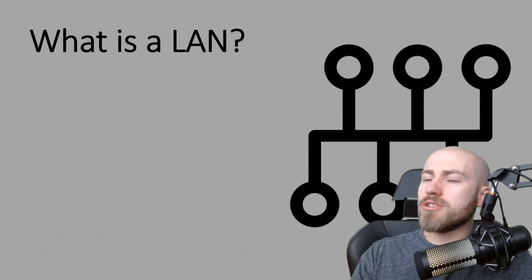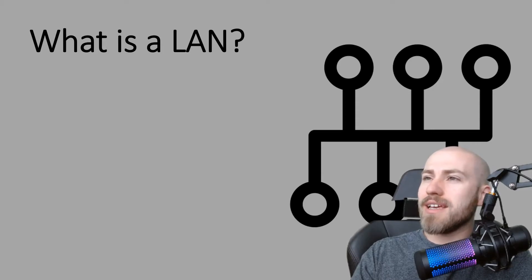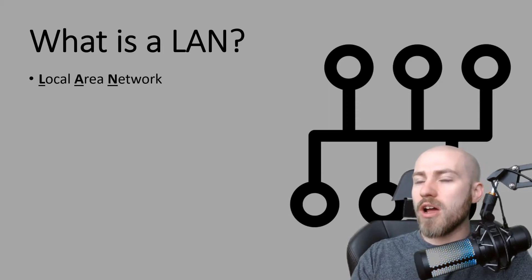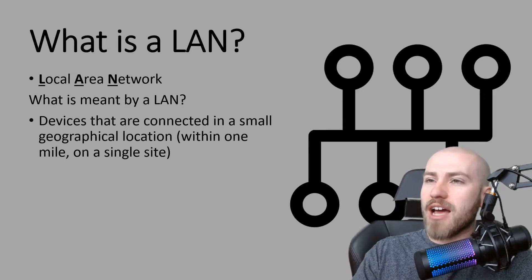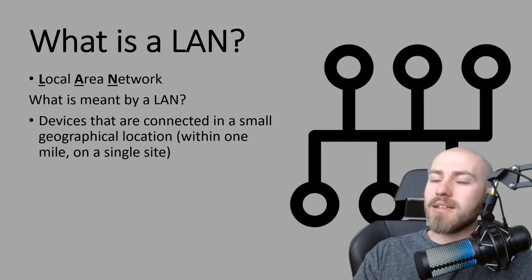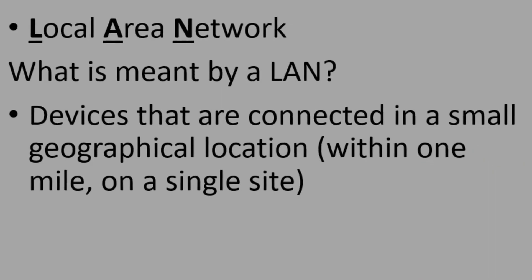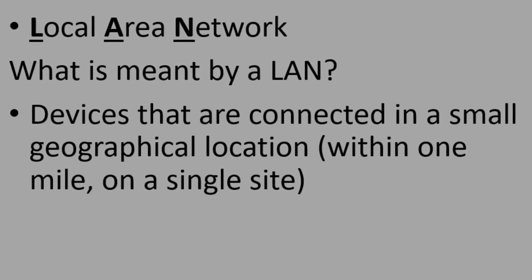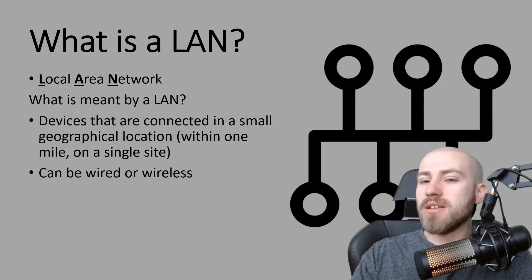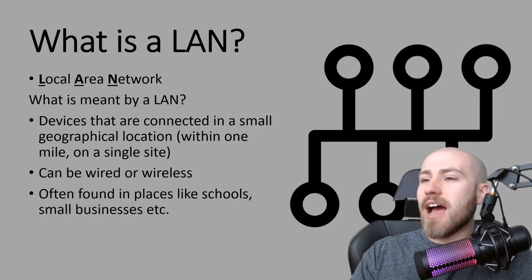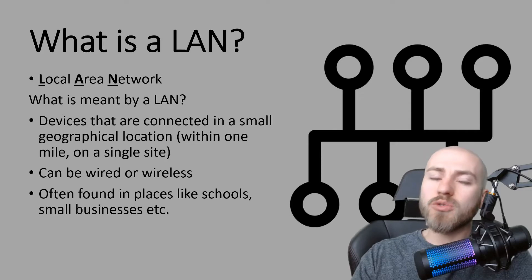There are two different types of network to discuss. The first is a LAN, which stands for local area network. If asked on your exam to explain what is meant by a LAN, you would answer: devices that are connected in a small geographical location, within one mile, on a single site. That 'single site' part is quite important and can get you an extra mark. A local area network can be wired or wireless, and is often found in places like schools and small businesses.